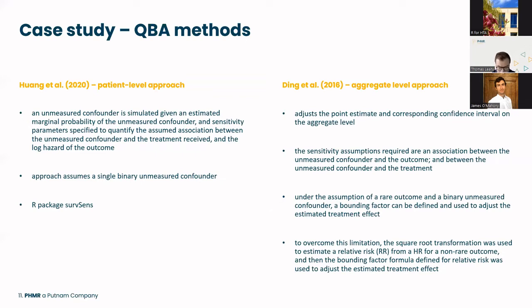The second method is an aggregate-level approach applicable when only aggregate data is available — described by Ding et al. This approach adjusts the point estimate and corresponding confidence interval at the aggregate level. The sensitivity assumptions required are the association between the unmeasured confounder and the outcome, and between the unmeasured confounder and the treatment. Under the assumption of a rare outcome and a binary unmeasured confounder, a bounding factor can be defined and used to adjust the estimated treatment effect.